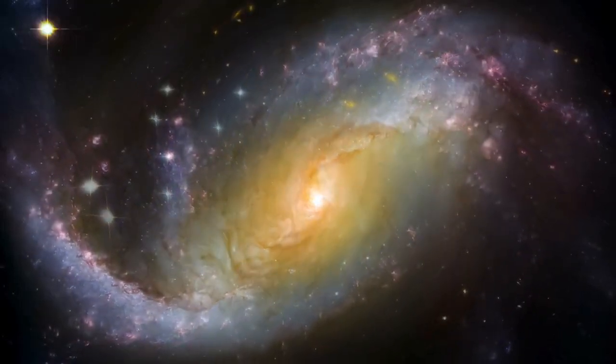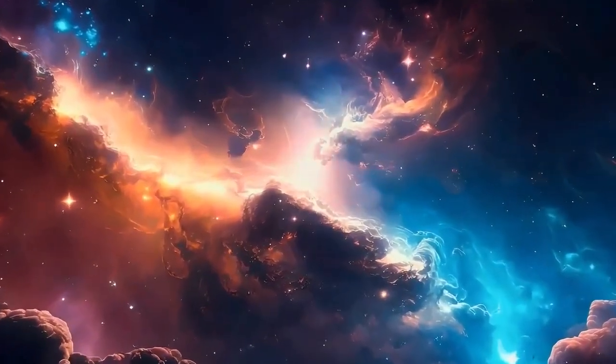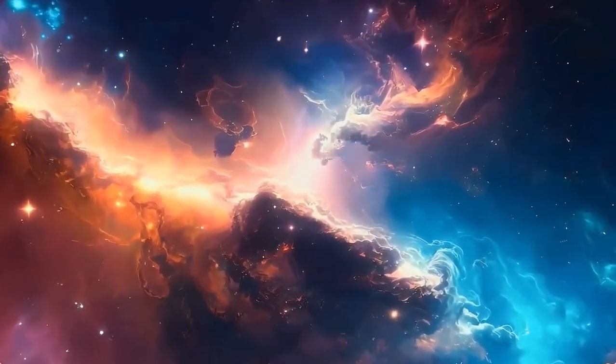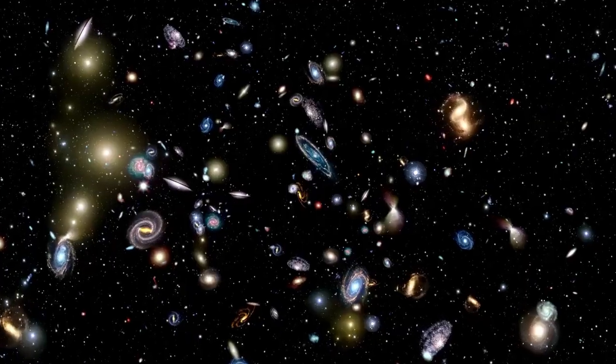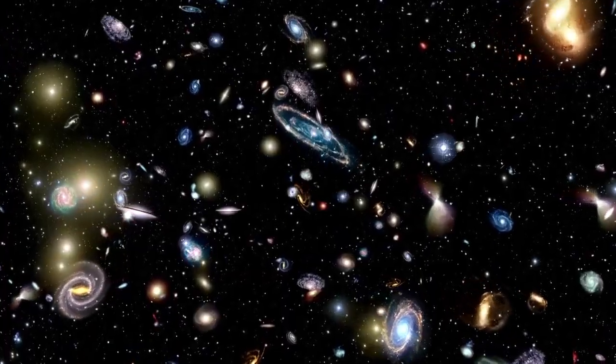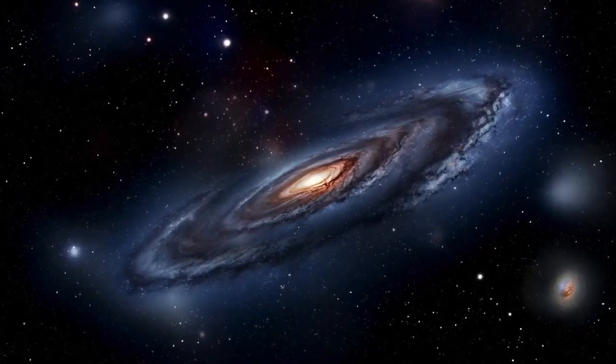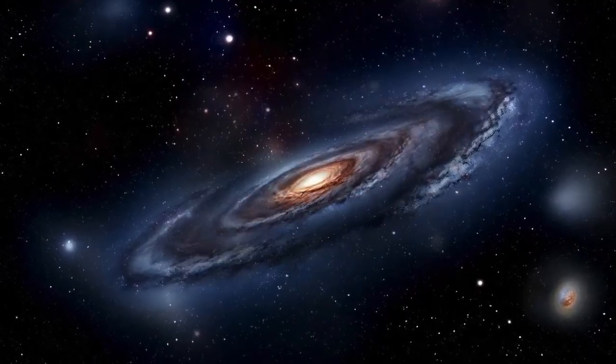The Hubble Space Telescope gave us tantalizing views of this early universe, but it did not have infrared sensitivity and mirror size to cut through the dense mantle of cosmic dust or see the thinnest, most distant light. That is where James Webb shines, equipped with a huge 6.5 meter primary mirror and the most advanced infrared detectors ever put into orbit.